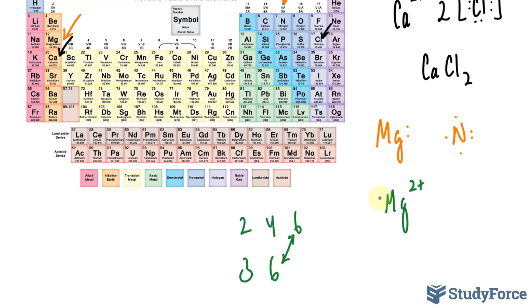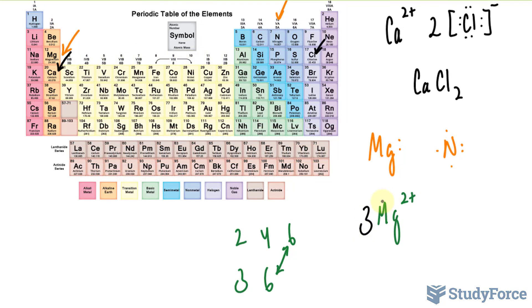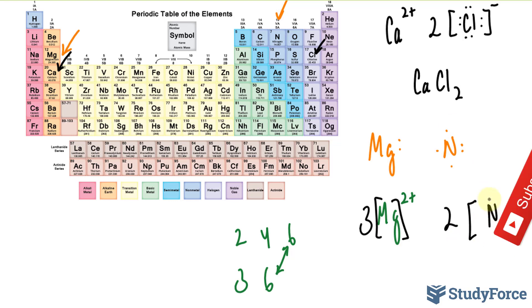Therefore, I'll write down three in front of magnesium, and don't forget the square brackets. And we'll write down two, bracket, nitrogen with a full octet. And each nitrogen ion had to gain three electrons, so I'll write down three minus.